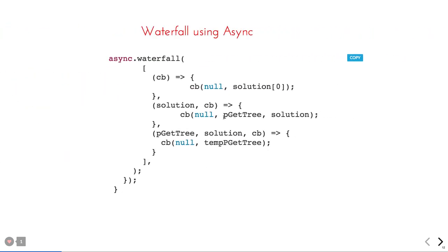Node.js also has async waterfall, where you have sequential callback execution: callback one gets some data and passes it to the second callback. It is like promise chaining but with callbacks — this is async dot waterfall, which comes with the core Node.js async library.